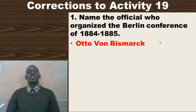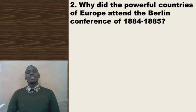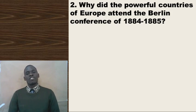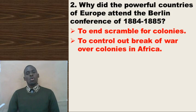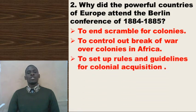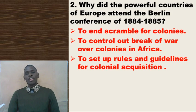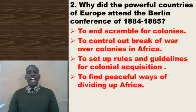Question two: Why did the powerful countries of Europe attend the Berlin Conference of 1884 to 85? The correct responses are: one, to end the scramble for colonies; two, to control the outbreak of war over colonies in Africa; three, to set up rules and guidelines for colonial acquisitions; and four, to find peaceful ways of dividing up Africa.